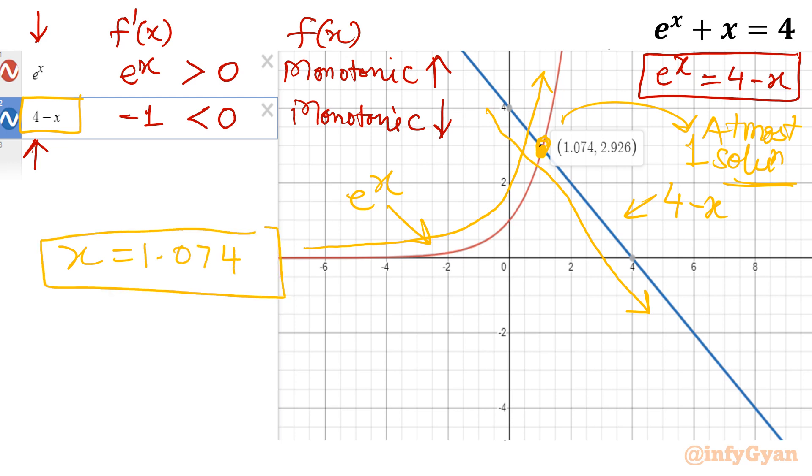Now method number 2. Let me consider method number 2. Okay. So this method is I will solve this using Newton-Raphson method. Newton-Raphson method. What I will consider? I will consider intermediate value theorem. Let me write f(x) is equal to e^x + x - 4.